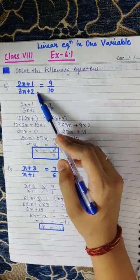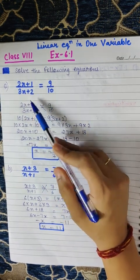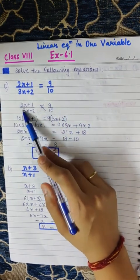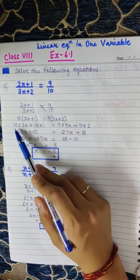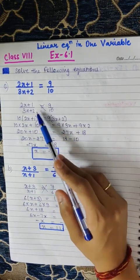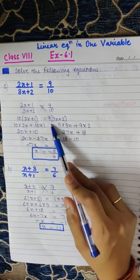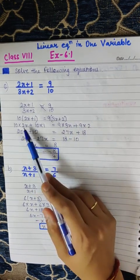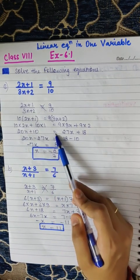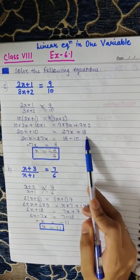Cross multiply it. Multiply 2x plus 1 by 10 and multiply 3x plus 2 by 9. On multiplying 2x plus 1 by 10, we get 10 into 2x plus 10 into 1. Multiplying 9 by 3x plus 2, we get 9 into 3x plus 9 into 2. So, 20x plus 10 is equal to 27x plus 18.